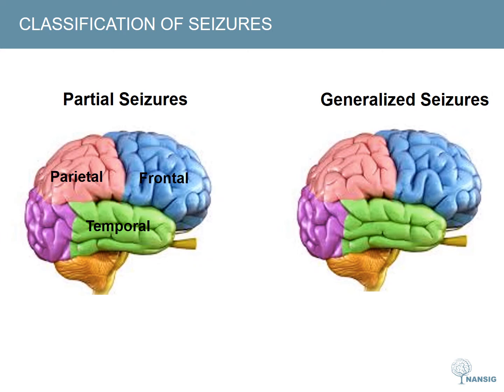Thirdly, a motor disturbance such as rubbing or chewing, and lastly an affective disturbance such as feeling pleasure, depression or fear. Occipital lobe seizures are very uncommon and present with a visual hallucination prior to the seizure.